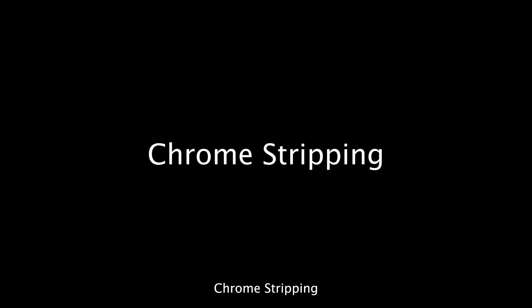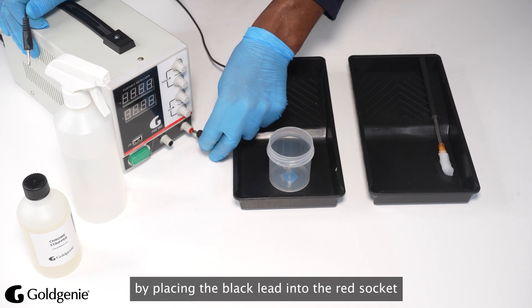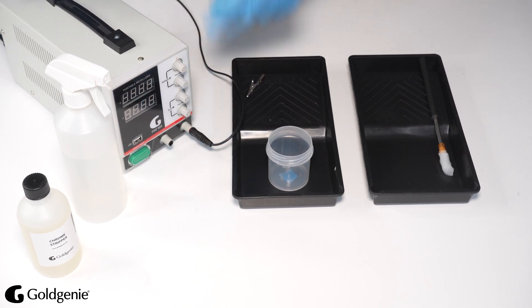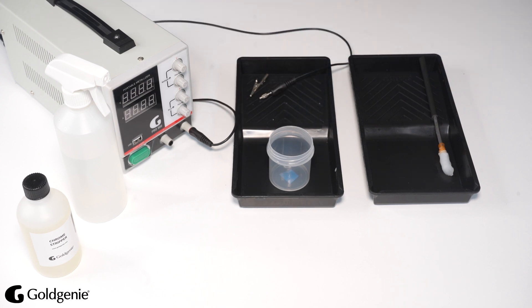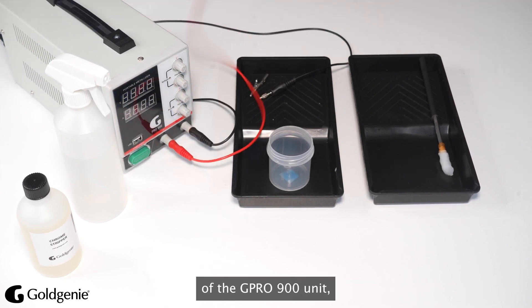Chrome Stripping. To chrome strip an item, you have to reverse the leads by placing the black lead into the red socket and then the red lead into the black socket of the G Pro 900 unit.